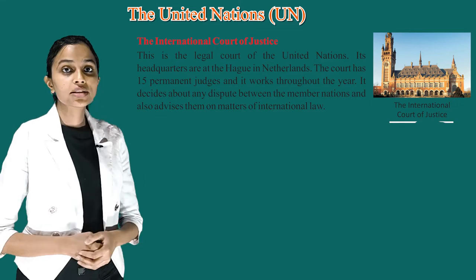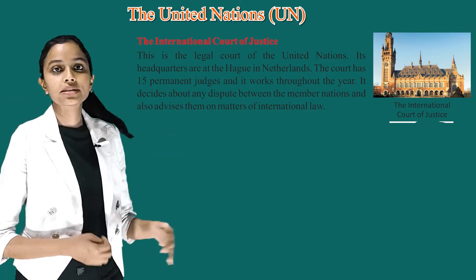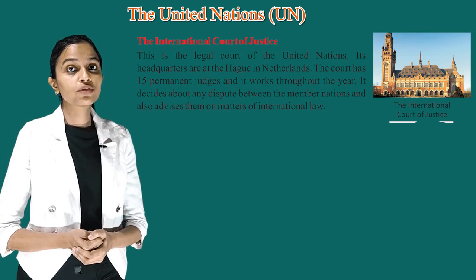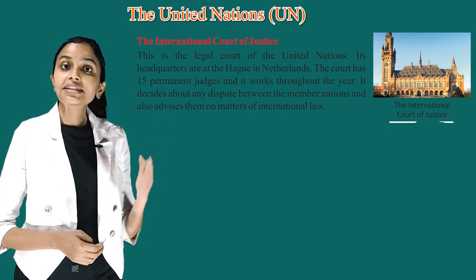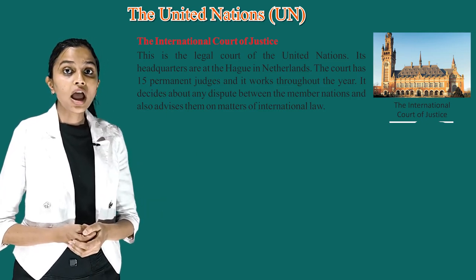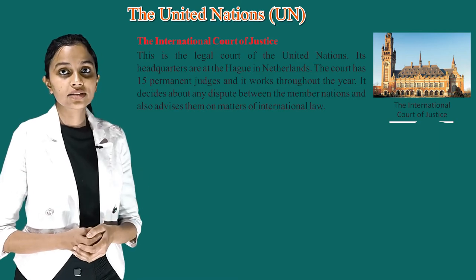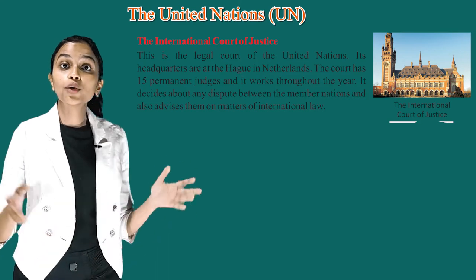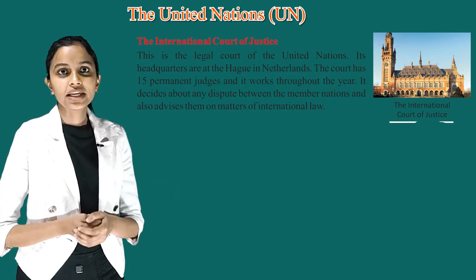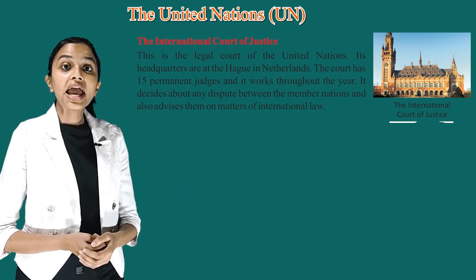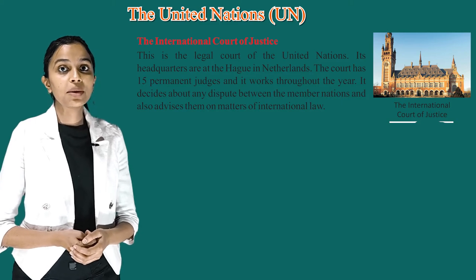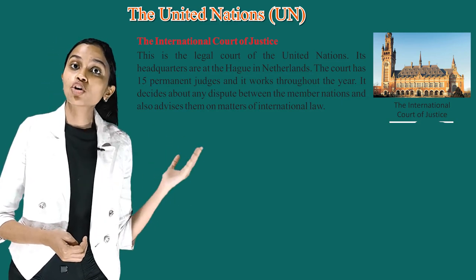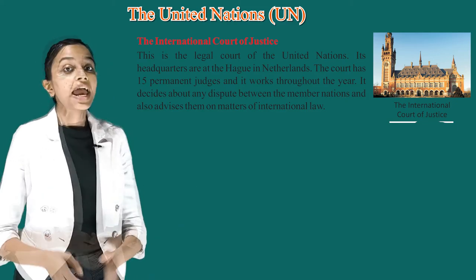The fifth is the International Court of Justice. This is the legal court of the United Nations. Its headquarters are in The Hague, Netherlands. The court has 15 permanent judges and it works throughout the year. It decides about any dispute between member nations and also advises them on matters of international law.